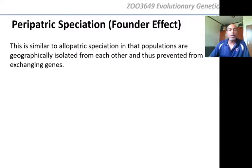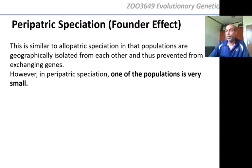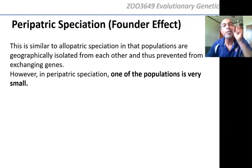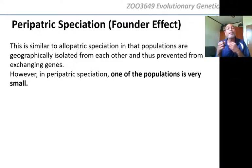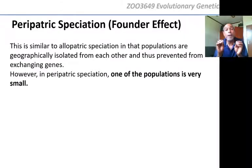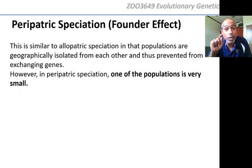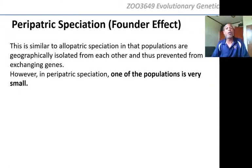What about peripatric speciation? Very similar to allopatric, but one of the populations is small. When a population is small, genetic drift operates mostly on that population. This speciation is like allopatric speciation except that in one of the populations, genetic drift has a much higher influence. The populations will diverge much more quickly — you know that populations diverge at a rate of 1 divided by 2N, so if N is small, the population diverges very quickly. That's the key to peripatric speciation.